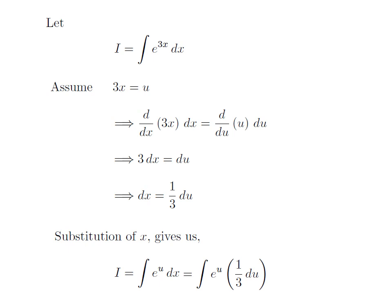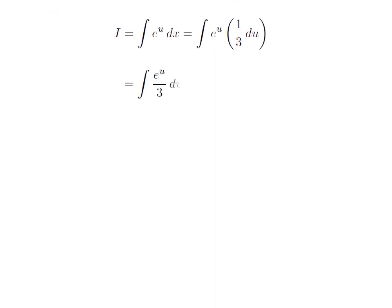As differential of x is equal to 1 upon 3 into differential of u, so I is equal to integration of e to the power u into 1 upon 3 into differential of u. Multiplied 1 upon 3 with e to the power u, we got I is equal to integration of e to the power u divided by 3 with respect to u.